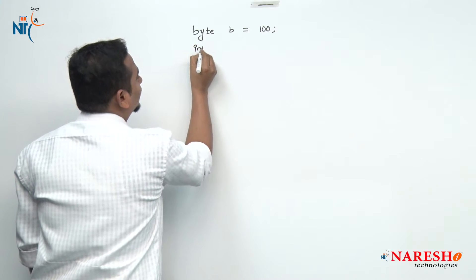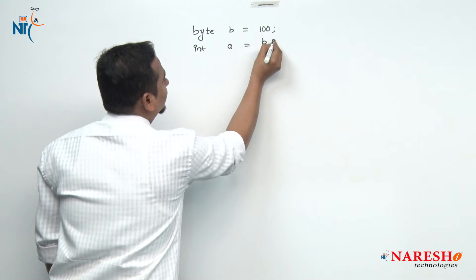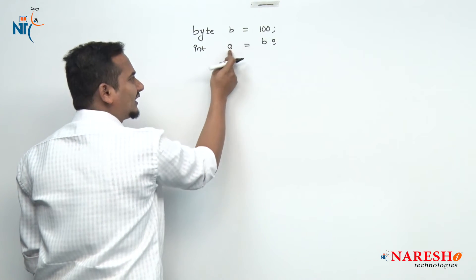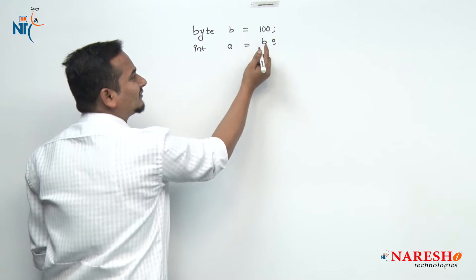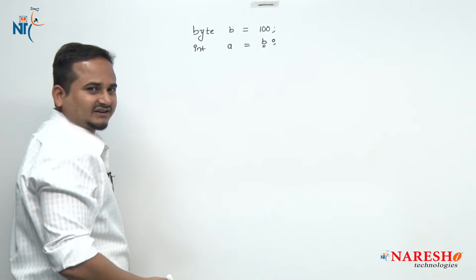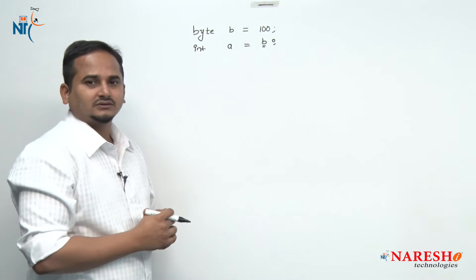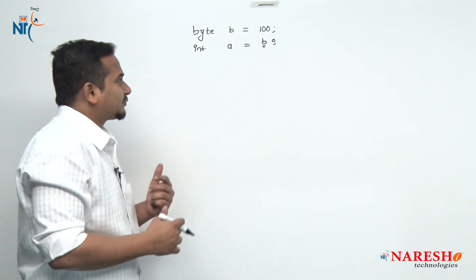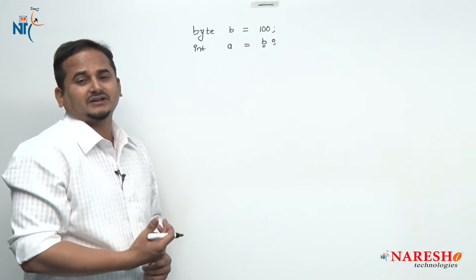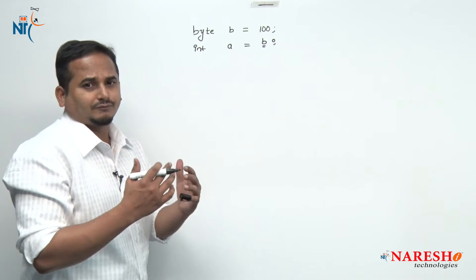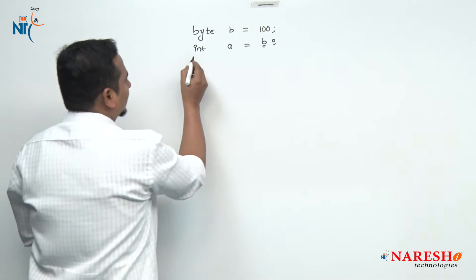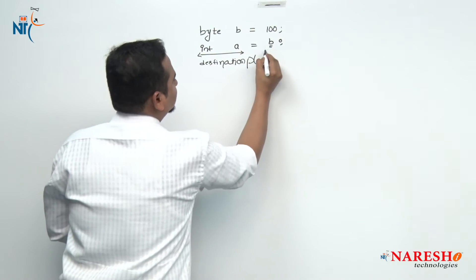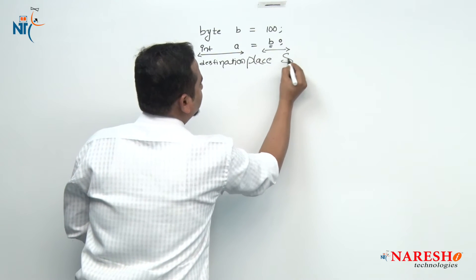Now I am going to talk about whenever we assign a value to a variable — here I am assigning the value 100, but not directly; with the support of another variable. In this process, how does the compiler behave? What type of functionality is taken by the compiler? Now, this place we can call the destination place.